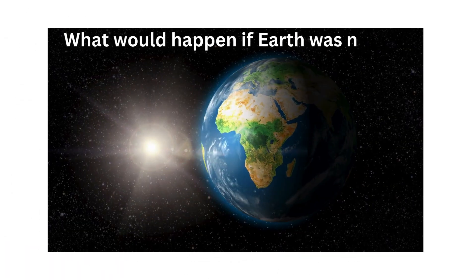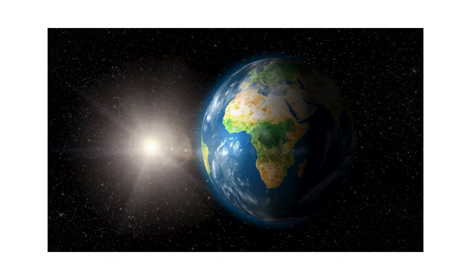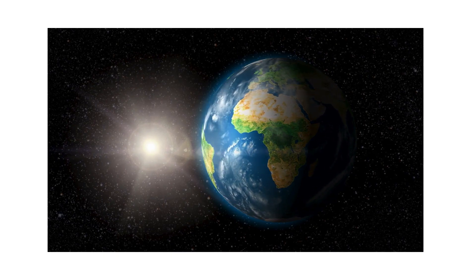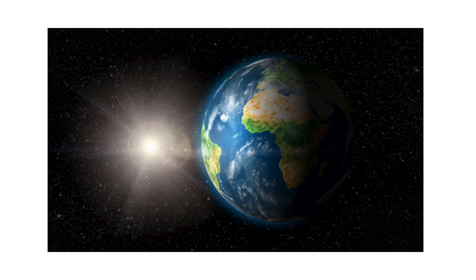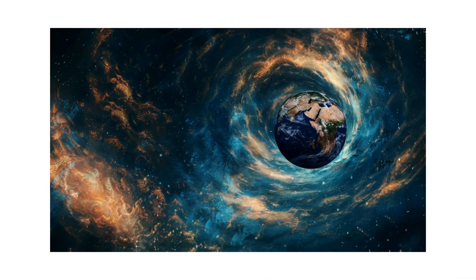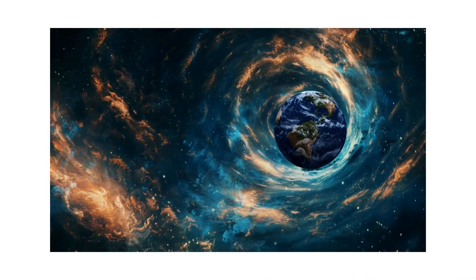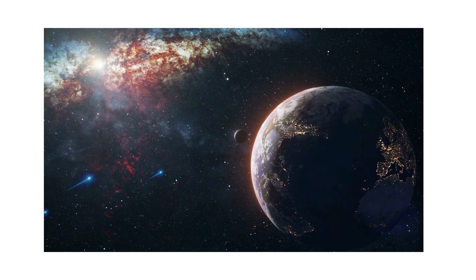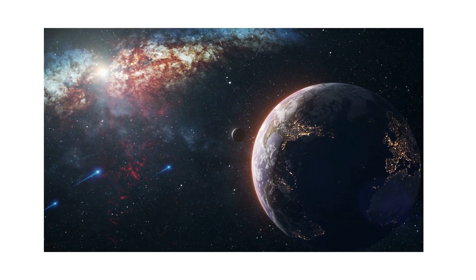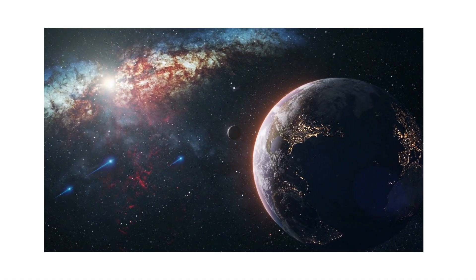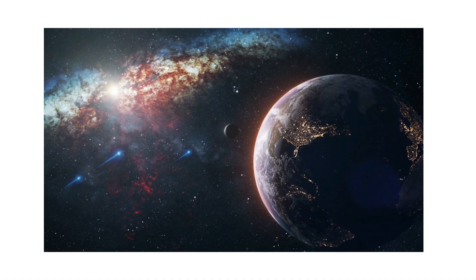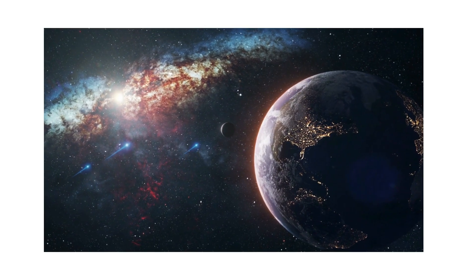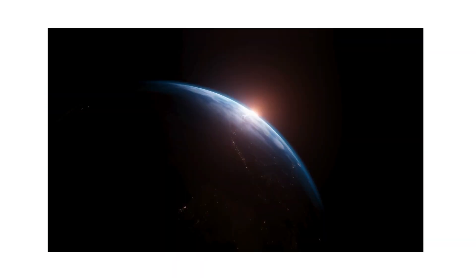What would happen if Earth was nearby? If Earth were placed close to an actively feeding black hole, the first effect would be intense radiation. High-energy X-rays and gamma rays from the accretion disk would ionize the atmosphere, destroying the ozone layer. This would expose the surface to direct solar ultraviolet radiation, lethal for most life forms. The constant particle bombardment from jets and winds would further strip atmospheric gases, eventually rendering the planet airless.